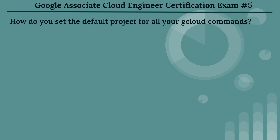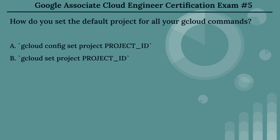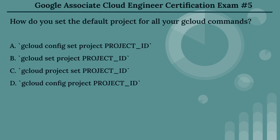The fifth question: how do you set the default project for all your cloud commands? The options are: Option A, gcloud config set project PROJECT_ID. Option B, gcloud set project PROJECT_ID. Option C, gcloud project set PROJECT_ID. Option D, gcloud config project PROJECT_ID.